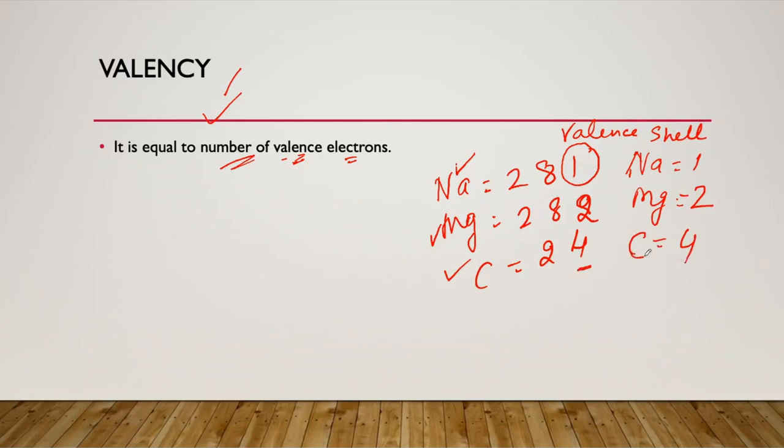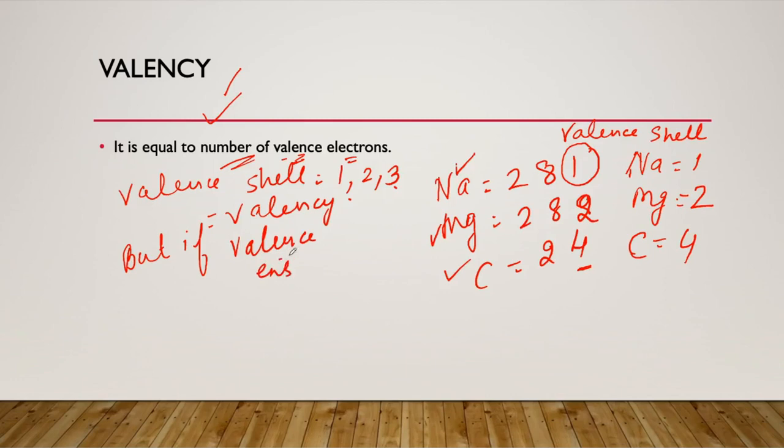That means sodium's valency is 1, magnesium's valency is 2. No doubt it seems like carbon's valency is 4, but we have made a general rule: if the valence shell has number of electrons up to 3, that is equal to valency. But if the number of valence electrons is 4, 5, 6, 7, or 8, then valency equals 8 minus the number of valence electrons.